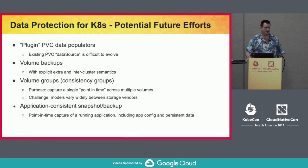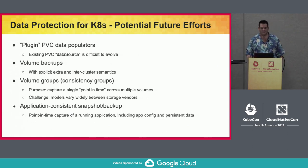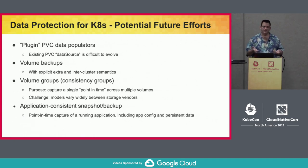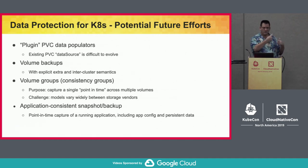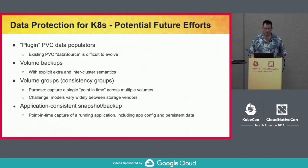One issue is that snapshots today work by PVCs having a data source — when you create a PVC, you specify to populate it from a snapshot or another volume. The problem is that requires core Kubernetes to understand what those data sources are, creating tension between keeping a stable core and wanting to specify different sources to populate data. There's work being discussed to generalize the data source concept so you could plug in data source populators and populate volumes in different ways.